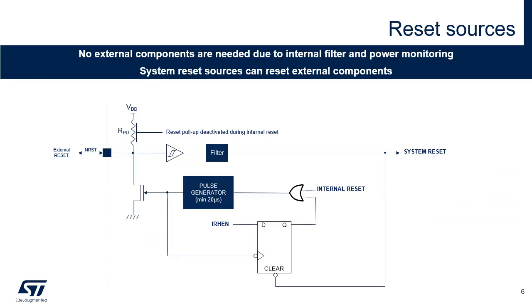Here's the simplified block diagram of the system reset. All internal reset sources provide a reset signal on the NRST pin, which can be used to reset other components of the application board. In addition, no external reset circuitry is needed due to the internal glitch filter and the safe power monitoring feature, which guarantees the reset of the application when VDD is below the selected threshold. The internal pull-up on the NRST pin, which maintains a high level when no reset signal drives it low, is deactivated when an internal reset is driven in order to reduce power consumption under reset.